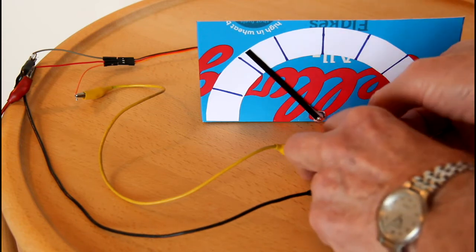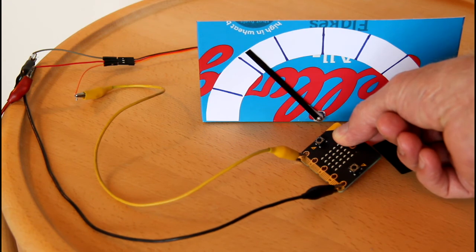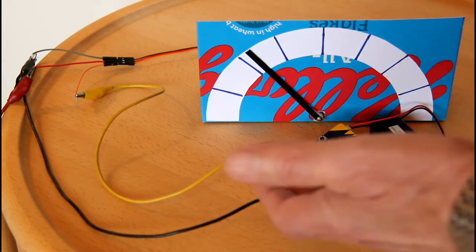Instead of removing batteries, you can hold down the reset button for a while and the microbit will enter sleep mode.